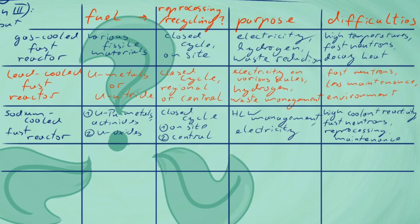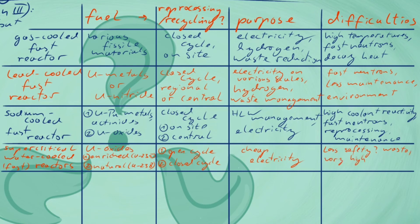Supercritical water-cooled reactors make use of high pressure and temperature to benefit from the higher thermal efficiency of supercritical water. Their fuel consists of either enriched or natural uranium in the case of a fast reactor type, leading to an open cycle in the first case, and a closed one with full actinide recycling in the second.